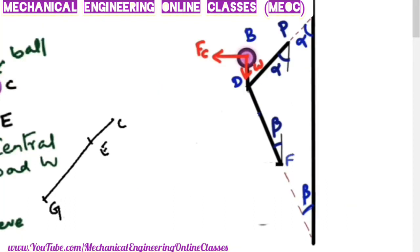Let us see the equilibrium of forces on one half of the Proel governor. Fc is the centrifugal force acting on the ball. W is the weight of the ball. Alpha and beta are the angles of inclination of the upper arm with vertical and the lower arm with vertical respectively. The notations used in Porter and Proel governors are the same.